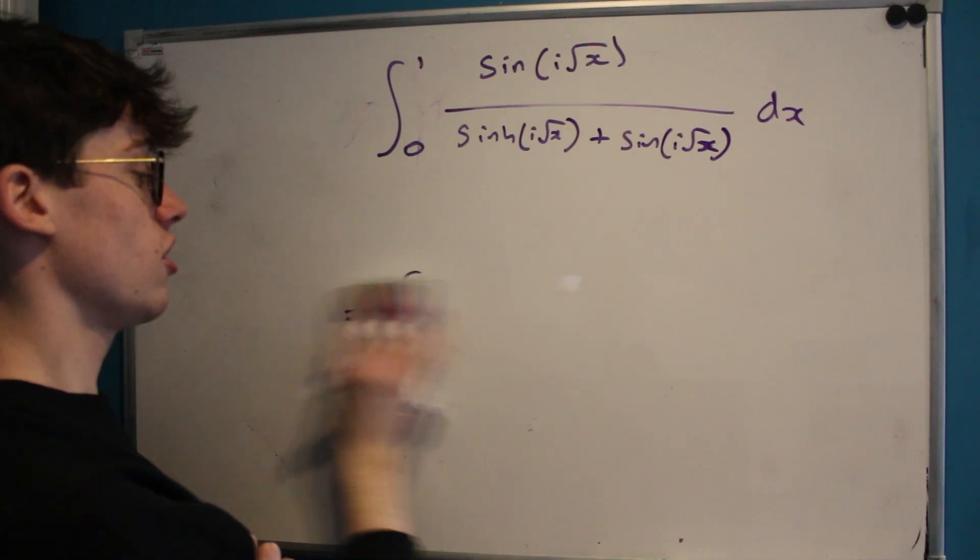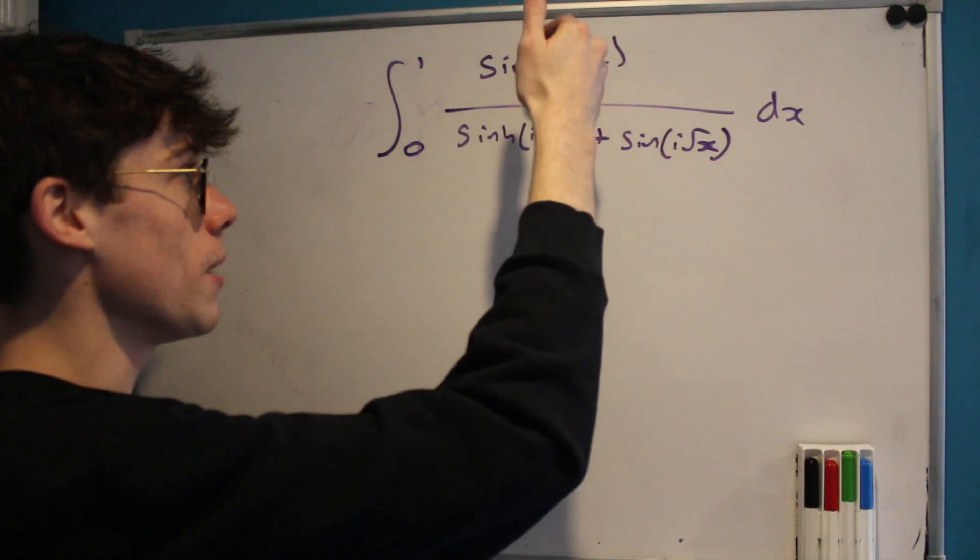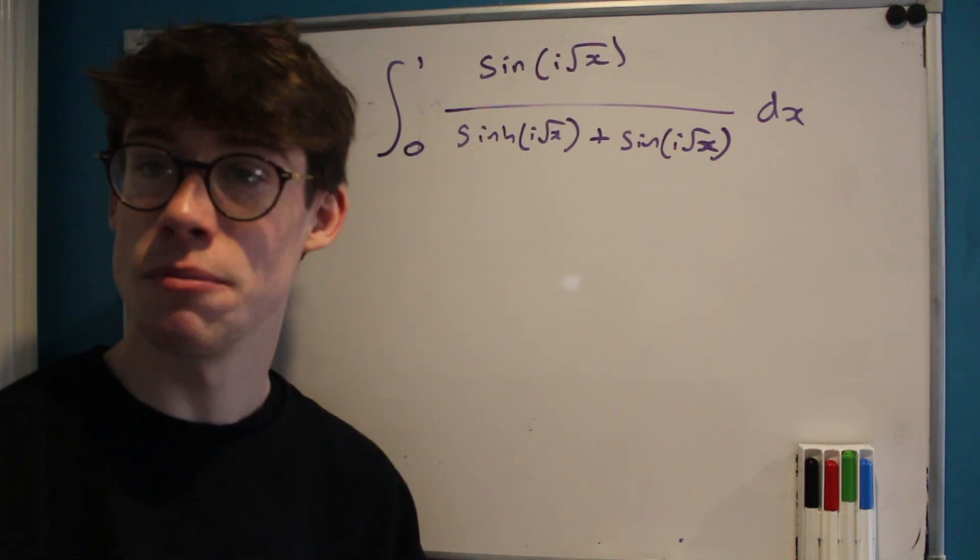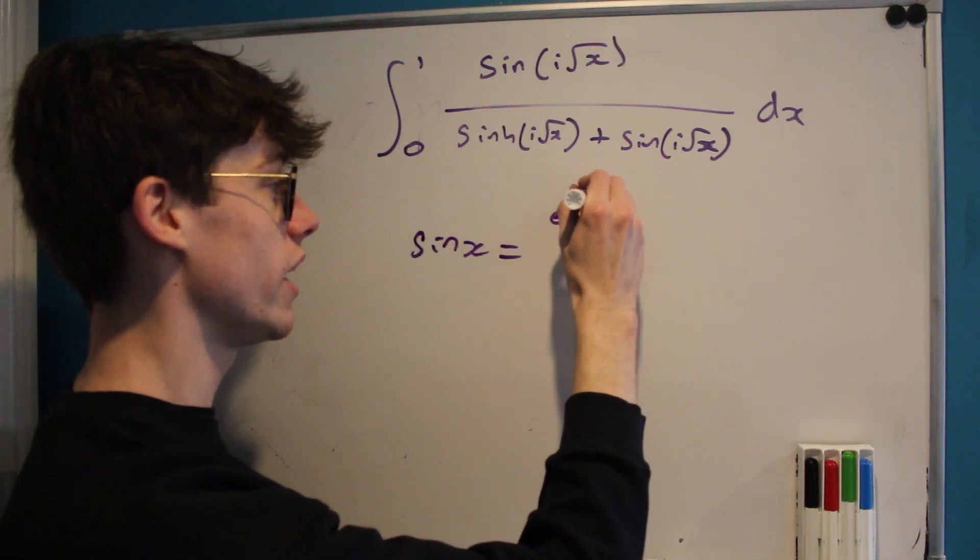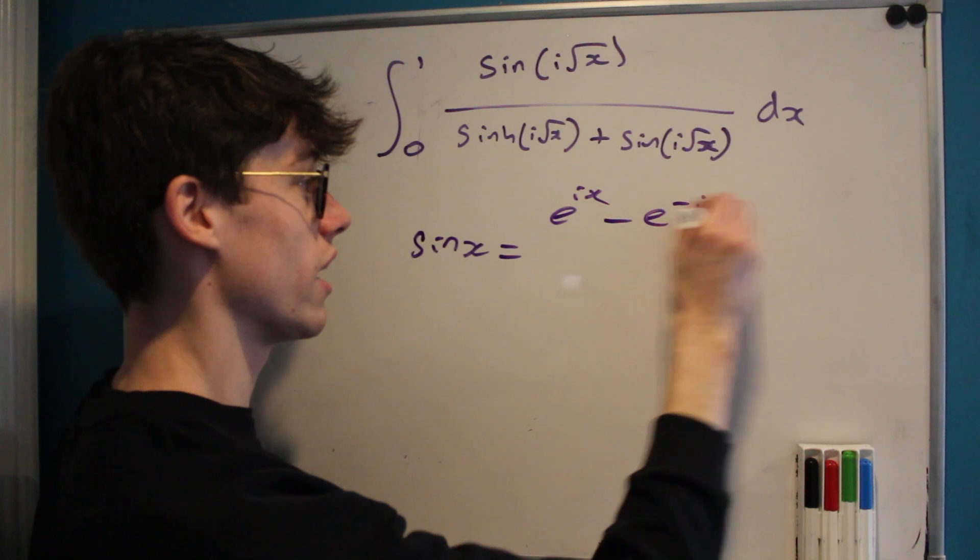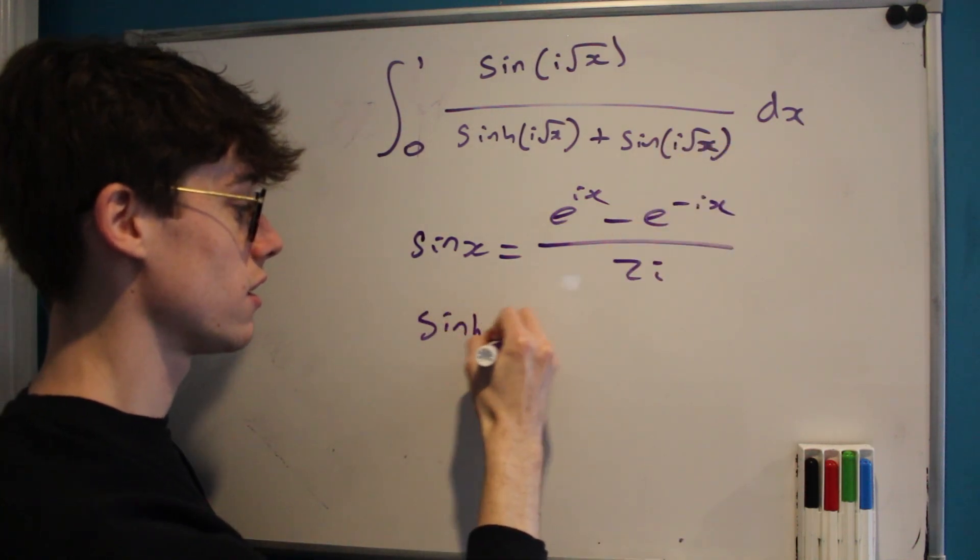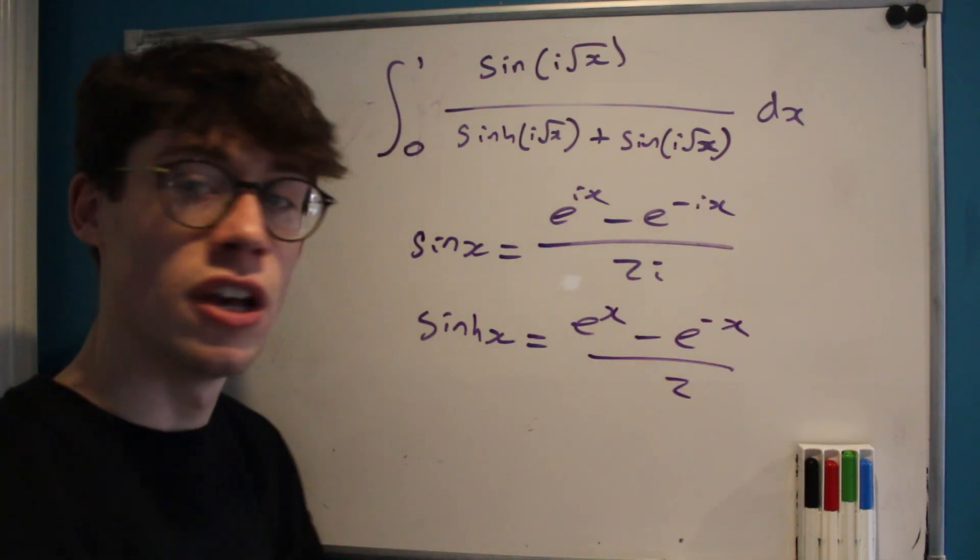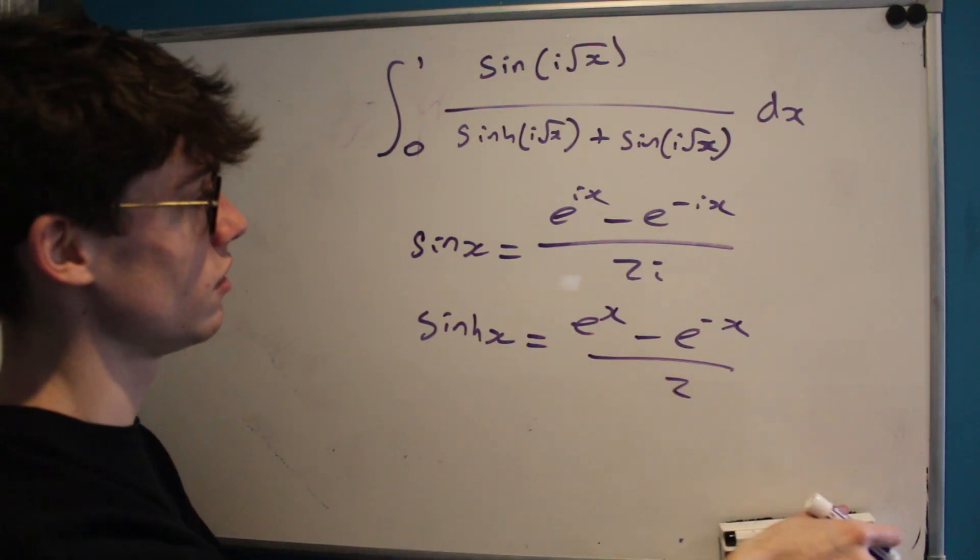And some of you may have spotted this when I mentioned i, but whenever you see i being inputted into sine or sinh we should start thinking about the relationship between those two functions, because sine x is e to the i x minus e to the minus i x over 2i, and sinh x is e to the x minus e to the minus x over 2. So we can come up with all sorts of interesting relationships between these two using complex numbers.